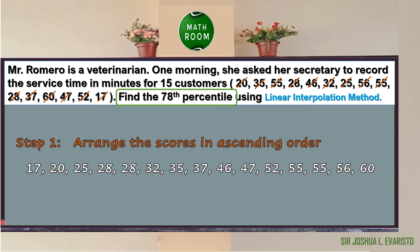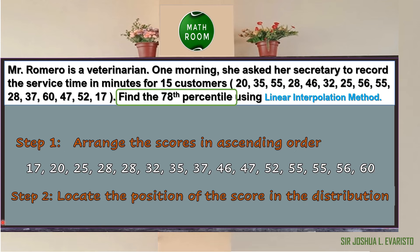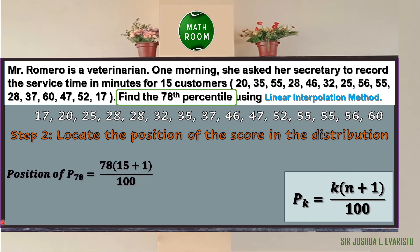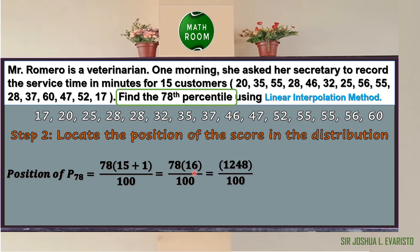For the solution, first arrange the scores in ascending order: 17, 20, 25, 28, 28, 32, 35, 37, 46, 47, 52, 55, 55, 56, and 60. The second step is to locate the position. The position of P sub 78 = 78 × (15 + 1) / 100. The denominator is 100 for percentile, k = 78, and n = 15. Computing: 15 + 1 = 16, 78 × 16 = 1248, 1248 ÷ 100 = 12.48.